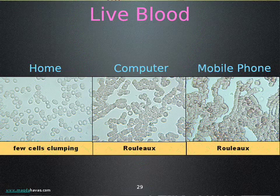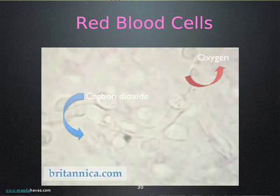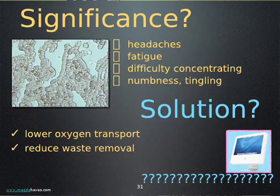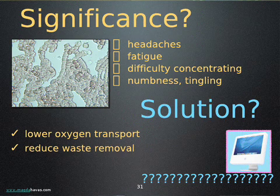Here is a short video on what your blood does. The capillaries are so narrow that red cells must squeeze through in single file, showing the importance of their elasticity. You can see that if you have this kind of blood formation, you're not going to have very good oxygen exchange. The significance is lower oxygen transport and reduction in waste removal, and I think it could lead to many of the symptoms that electrically sensitive people suffer from: headaches, fatigue, difficulty with concentration, numbness, tingling in the fingers, and all sorts of things.